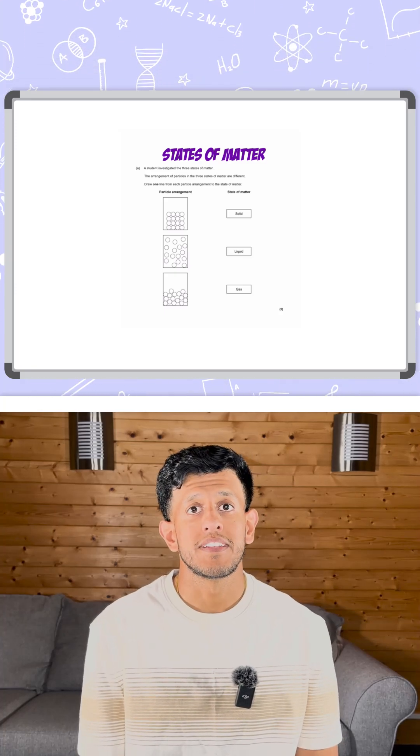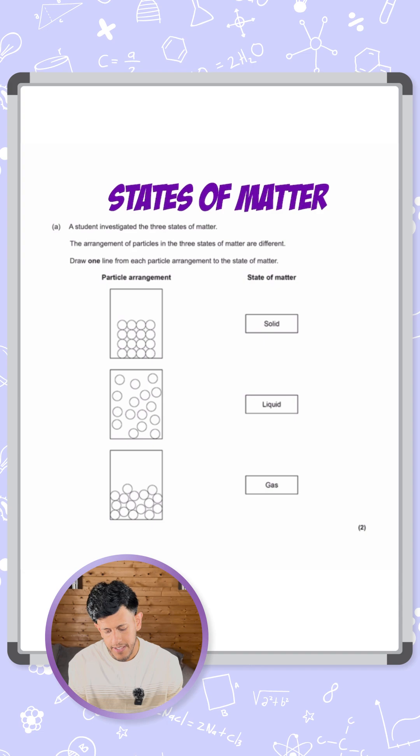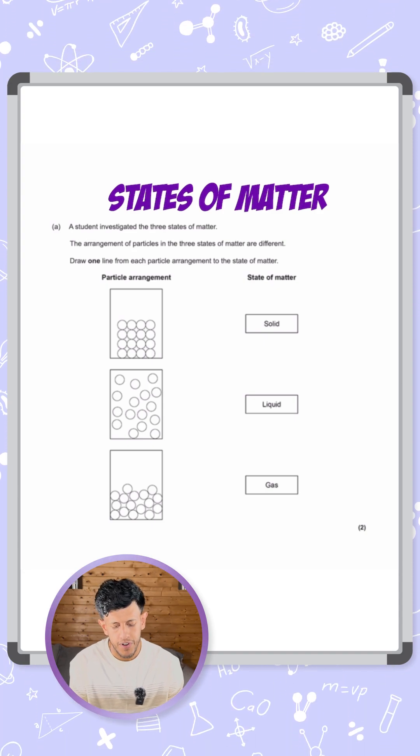Let's take a look at this question talking about the different states of matter. The question says a student investigated the three states of matter. The arrangement of particles in the three states of matter are different. Draw one line from each particle arrangement to the state of matter.